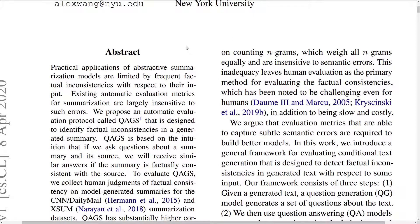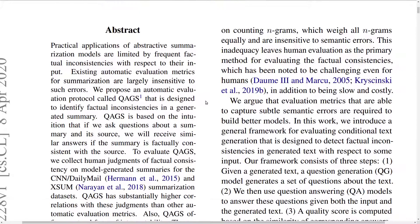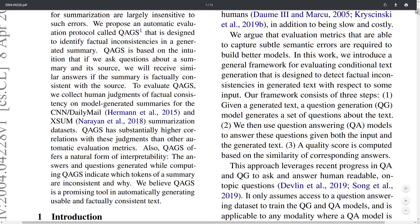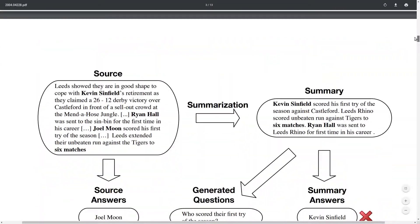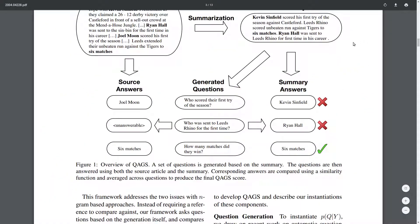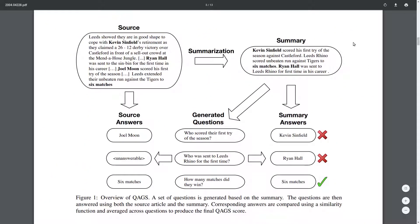It's a big challenge of how can we come up with suitable evaluation metrics that can catch such errors. In this paper they're proposing a new evaluation protocol called QAGS, specifically focusing on detecting factual inconsistencies generated within the summaries. Here we have an overview image of this QAGS approach given that you have an input article.